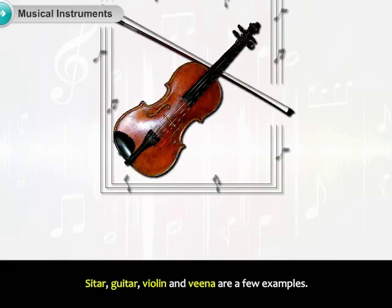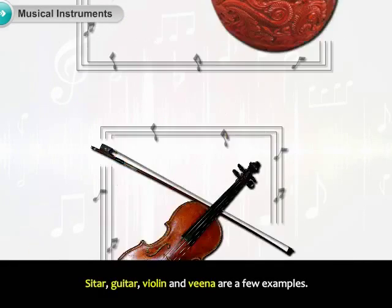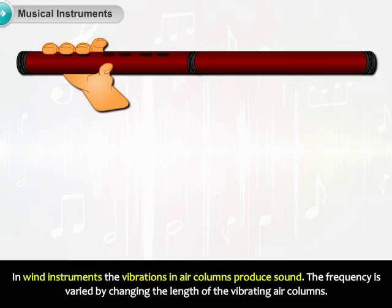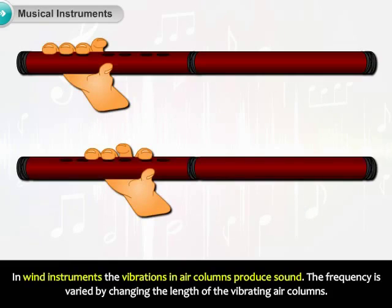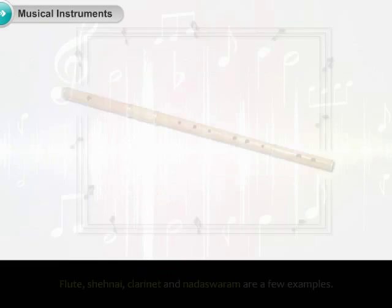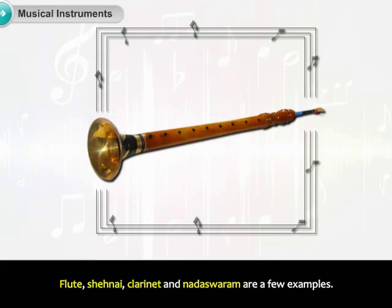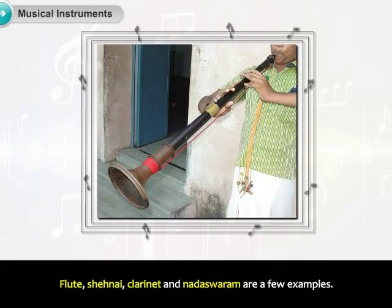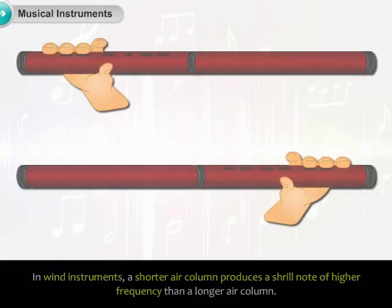Sitar, guitar, violin, and veena are a few examples of string instruments. In wind instruments, the vibrations in air columns produce sound. The frequency is varied by changing the length of the vibrating air columns. Flute, shenai, clarinet, and nadhaswaram are a few examples.